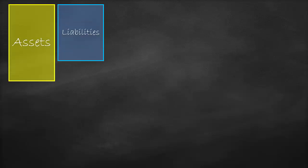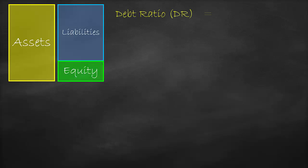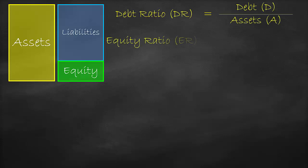We know that assets are financed through liabilities, which are also called debt and equity. Therefore, we can calculate the debt ratio as debt divided by assets, and the equity ratio as equity divided by assets.